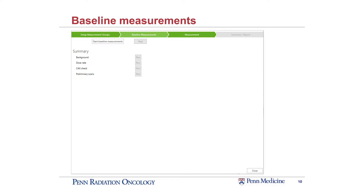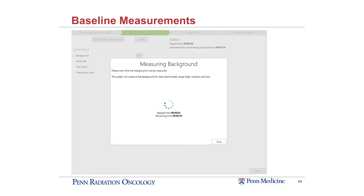This is what will pop up when you invoke the SmartScan software. We've already gone through the setup of the measurement groups, and now we're going to do the baseline measurements. This is really nice because once you start these baseline measurements, it keeps track of everything that's been done and organizes and lets you know what you still need to do. When you hit start baseline measurements, it'll start taking your background measurements, and this box will pop up. It will let you know an estimated time it needs to take the background, and then once the background measurement is done, it'll move on to dose rate preparation.